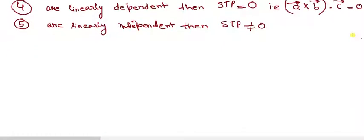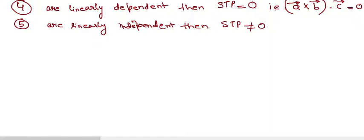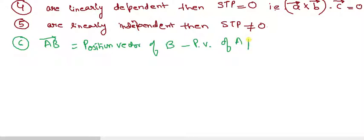Now I'll be moving to sixth point. What is, when you write vector AB, what does that mean? That means position vector of B point minus position vector of A point. I hope it's clear.